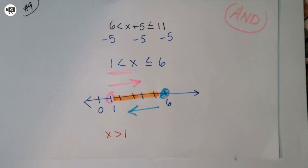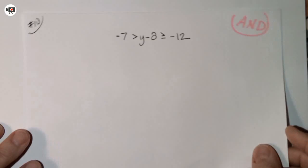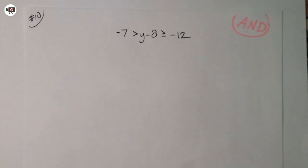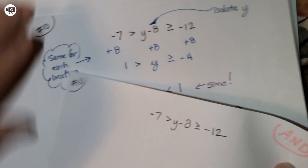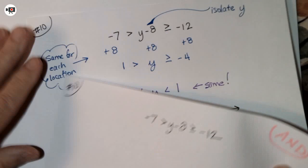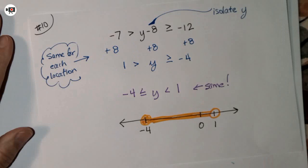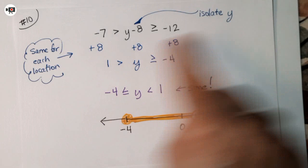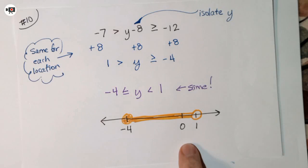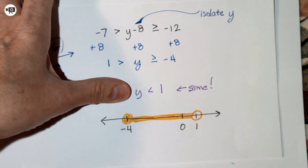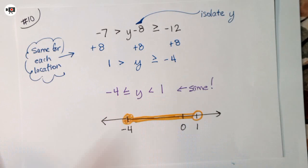Now try one on your own — pause the playback and work it. Here's how it should look: isolate the variable y. The compound inequality gives negative 4 is less than or equal to y is less than 1. Notice the symbols point the same direction — if they didn't, something went wrong.